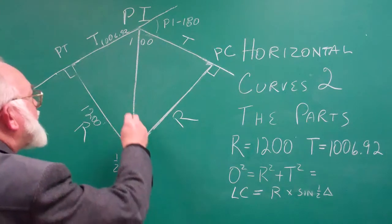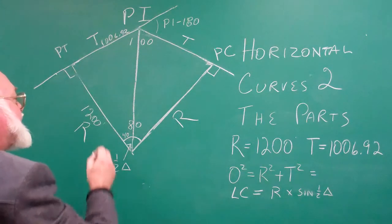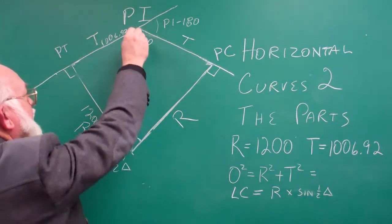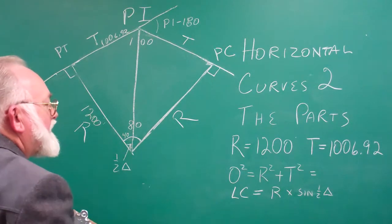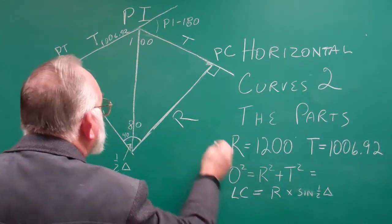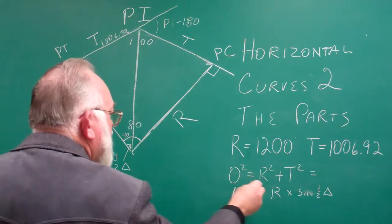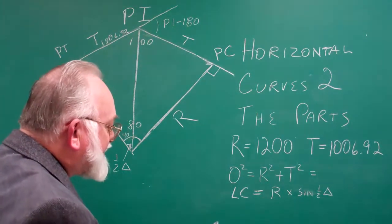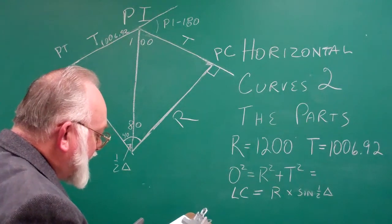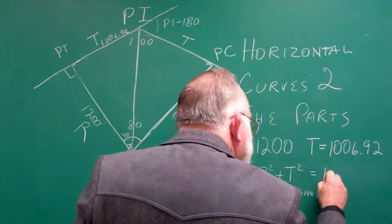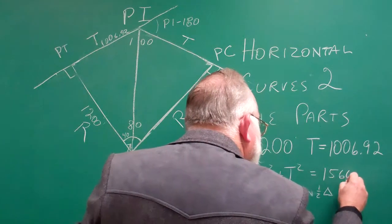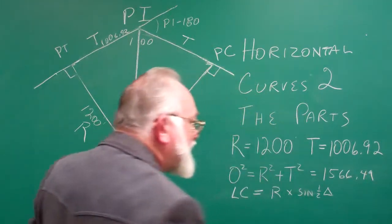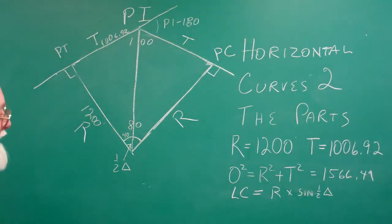We came up with a value of 1006.92, and we've got a right triangle. So to figure this distance here, all we do is take this squared equals radius squared plus tangent squared, which gives us 1566.49, or 1566.5 roughly.